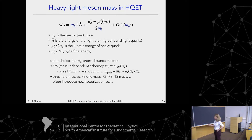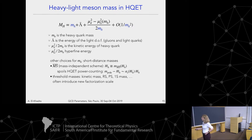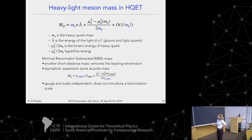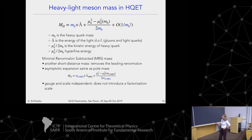One can choose a different mass instead of the pole mass. MS-bar is not ideal here, and threshold masses like the PS mass, kinetic mass, 1S mass introduce a new factorization scale. Javad was exploring some of those masses, and that motivated thinking beyond them — to the minimal renormalon subtracted mass, or MRS. I'll say MRS from now on. This is a short-distance mass that removes only the leading renormalon ambiguity from the pole mass, without introducing an additional factorization scale.